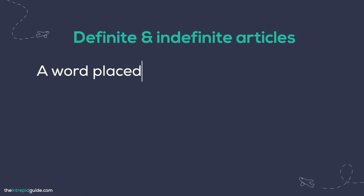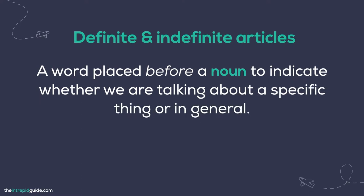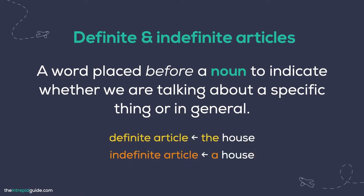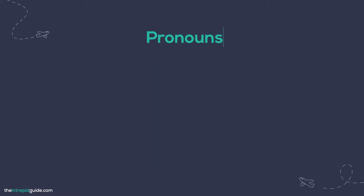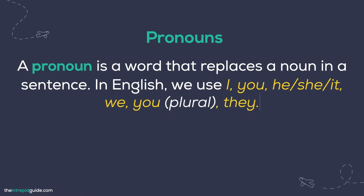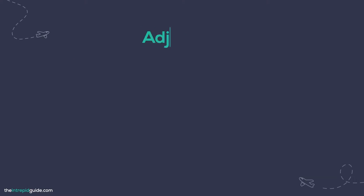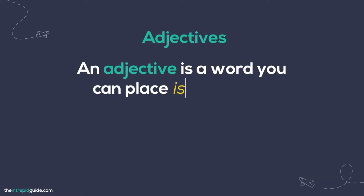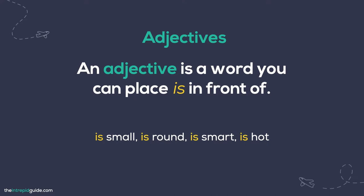Definite and indefinite articles: a word placed before a noun to indicate whether we are talking about a specific thing or in general. In English we use 'the' when speaking about a specific thing — this is called a definite article. When we speak about something in general, we use 'a' or 'an' — for example, 'a house' — this is called the indefinite article. Pronouns replace a noun in a sentence; in English we use I, you, he, she, it, we, and they. For example, in the sentence 'Mario ate a pizza,' we can replace Mario's name and say 'he ate a pizza.' Adjectives describe something — for example: is small, is round, is smart, is hot.